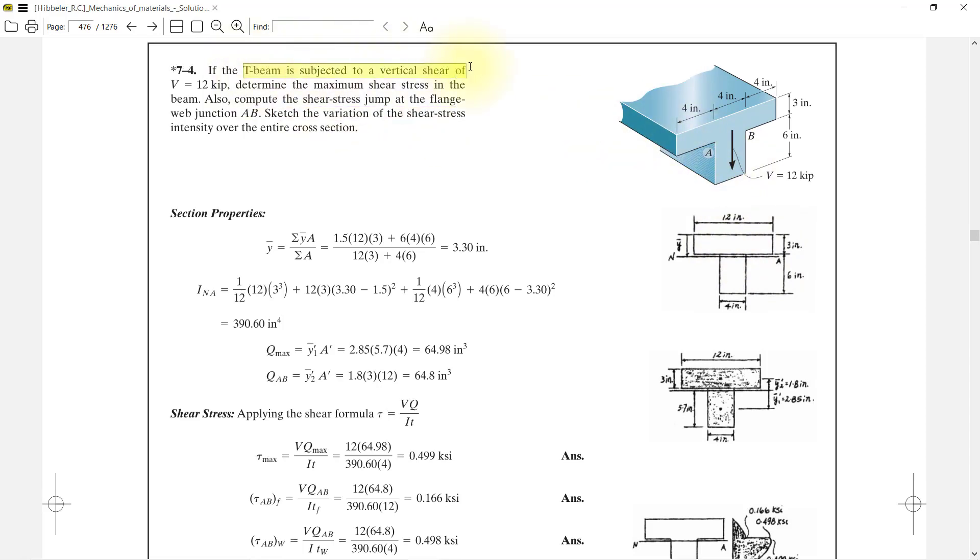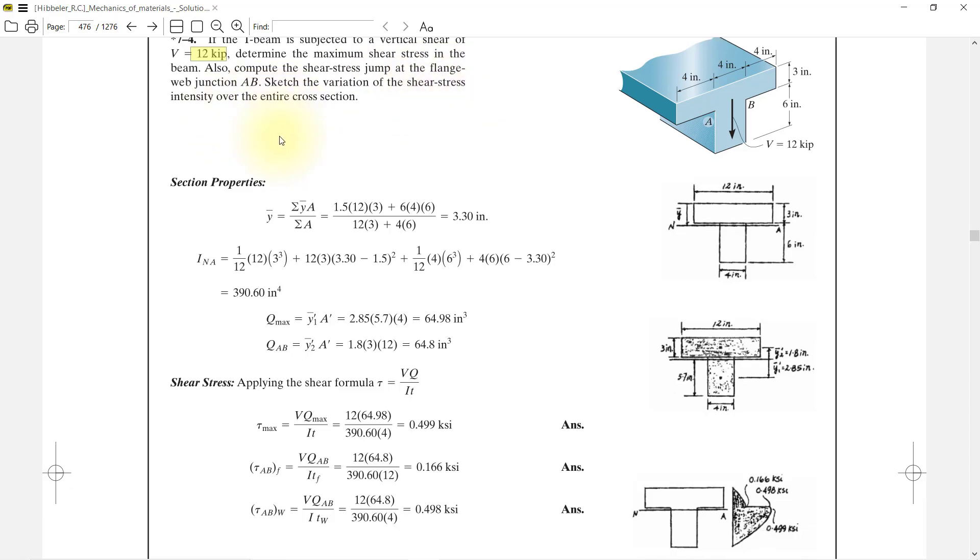The beam is subject to a vertical shear of 12 kip. Determine the maximum shear stress in the beam. Also compute the shear stress jump at the flange-web junction AB. Sketch the variation of shear stress intensity over the entire cross section.